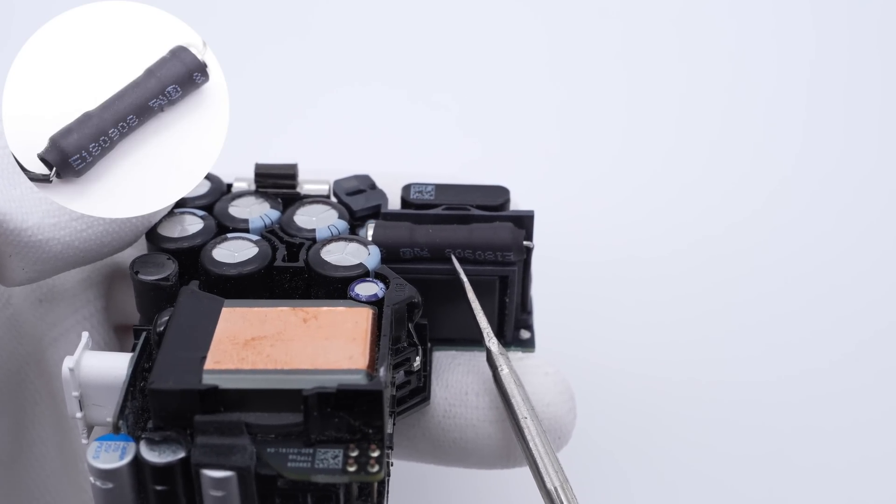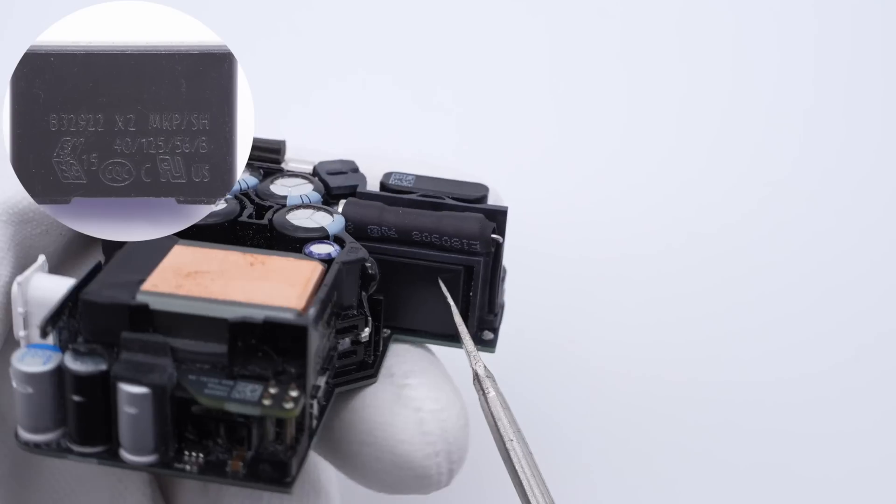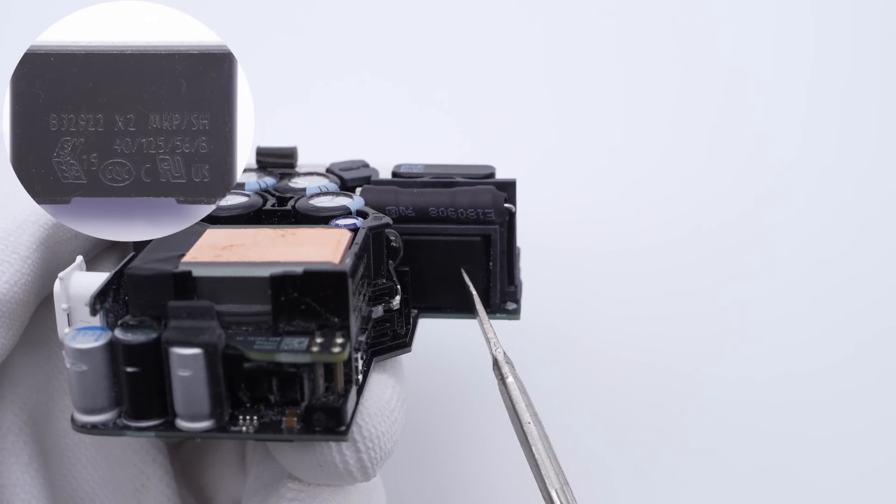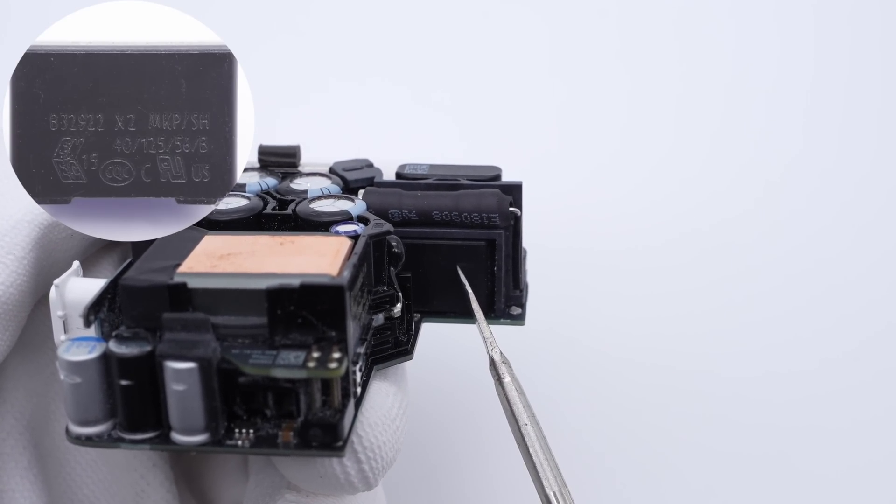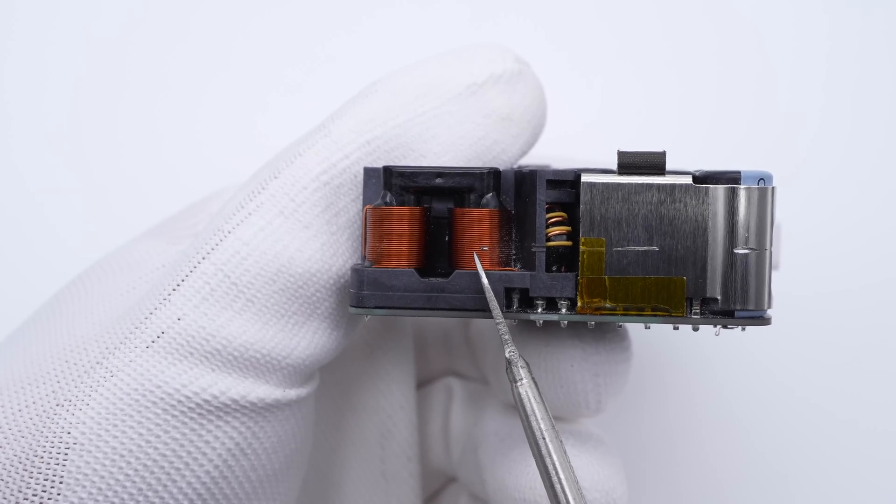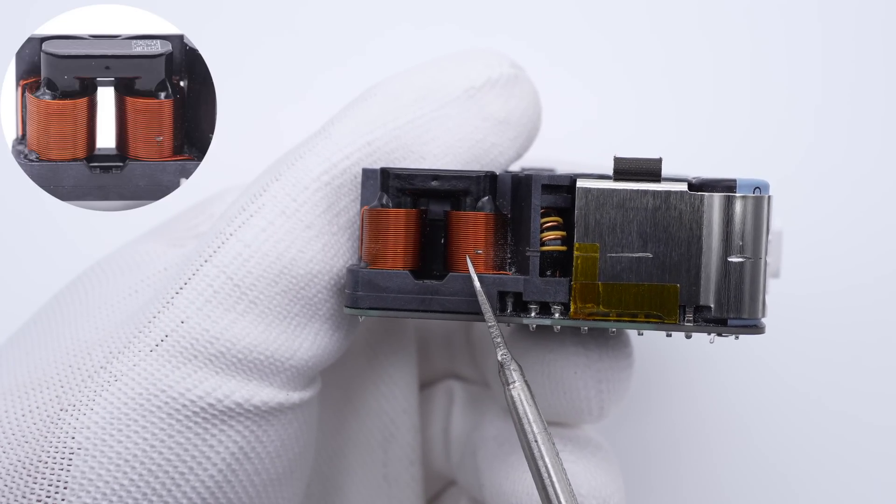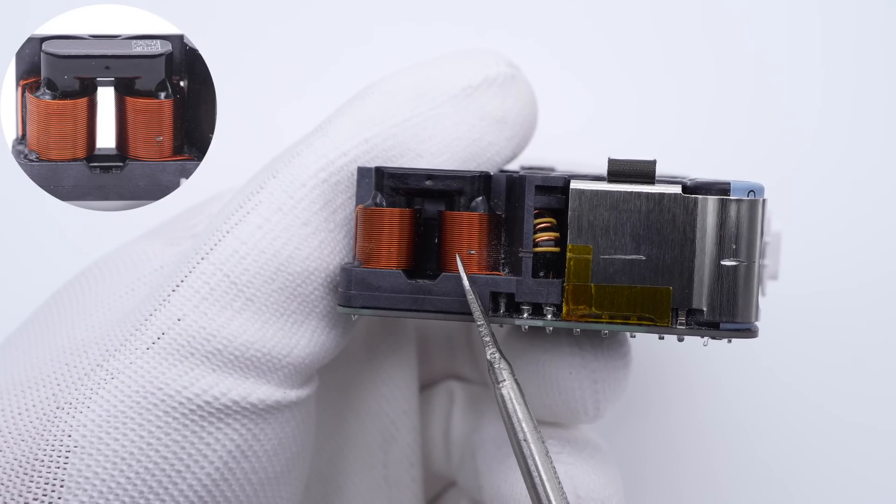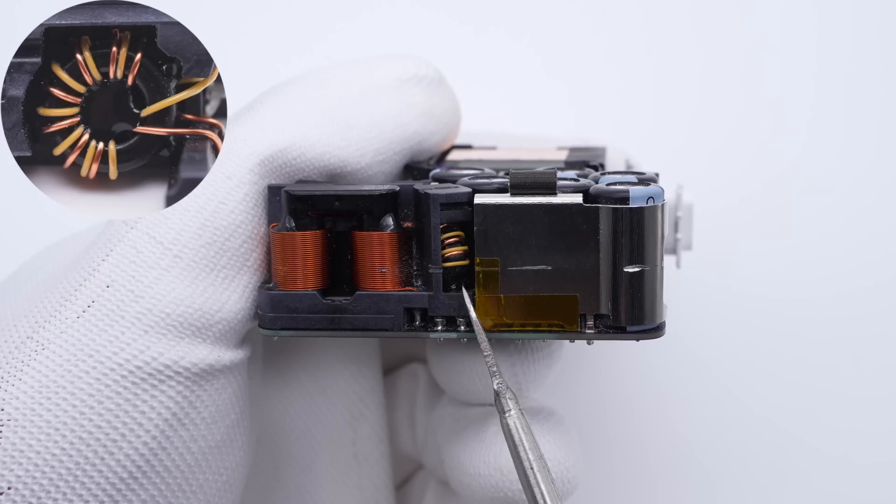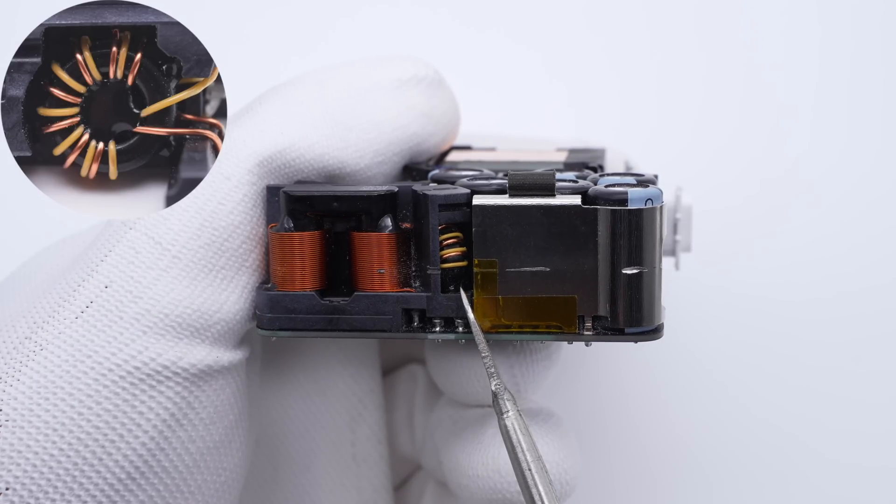The input fuse is placed horizontally and longer than others. The safety X capacitor is from TDK, 0.22μF. Two common mode chokes are fixed on an insulating frame. The first one is wound with flat copper wires, and the second one is smaller and is a toroidal core inductor.